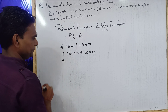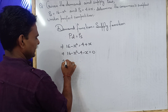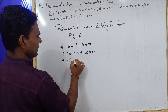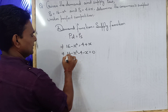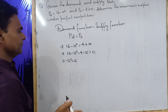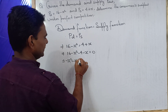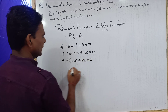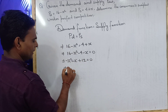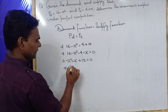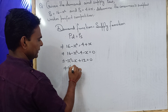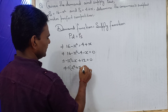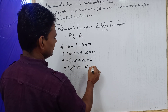Now, solving it and arranging terms: minus x squared minus x, and 16 minus 4 gives plus 12. So we have minus x squared minus x plus 12 equal to 0.